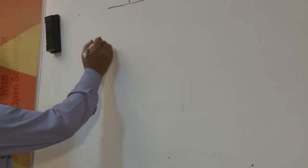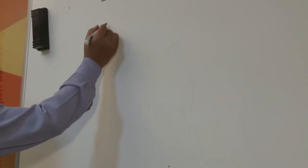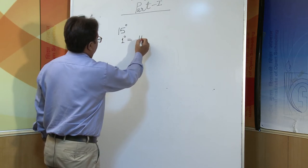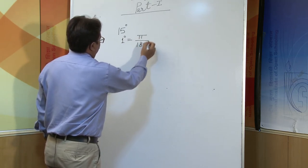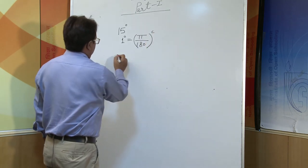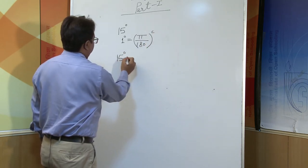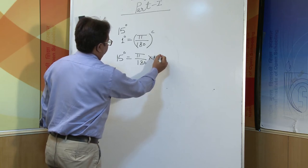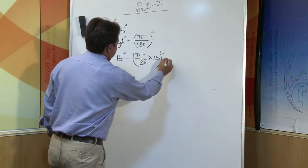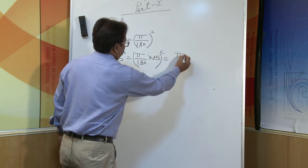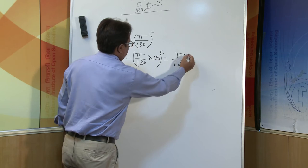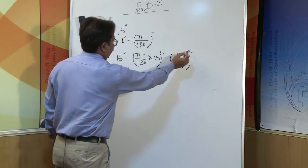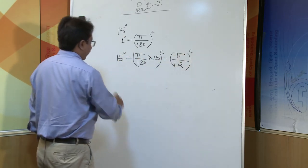Suppose we have to convert fifteen degrees into radians. We know one degree equals π upon one-eighty radians, so fifteen degrees equals fifteen times π upon one-eighty, which simplifies to π upon twelve radians.